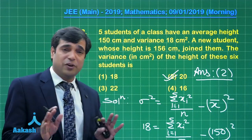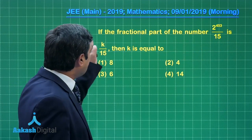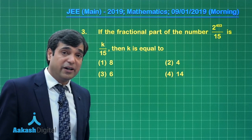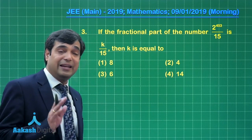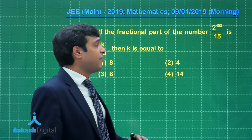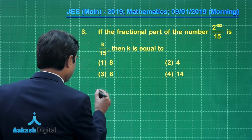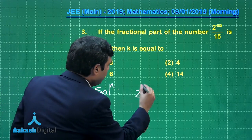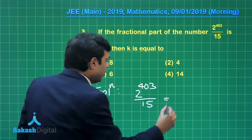Let us move on to the third question. If the fractional part of the number 2⁴⁰³/15 is k/15, then k is... Simply, the question is saying if 2⁴⁰³ is divided by 15, what is the remainder? So let us begin: 2⁴⁰³ ÷ 15.